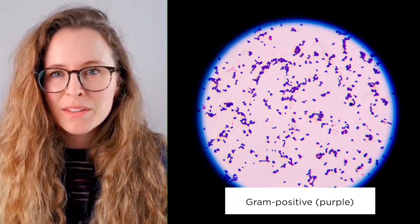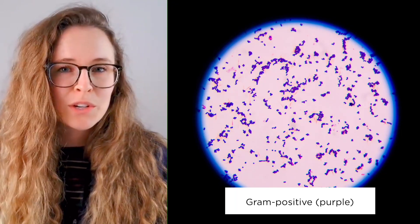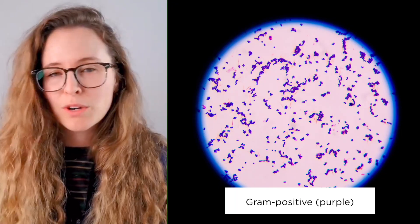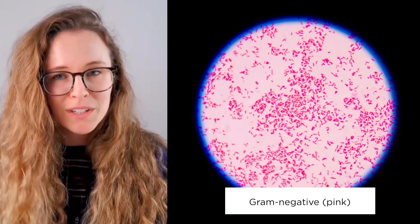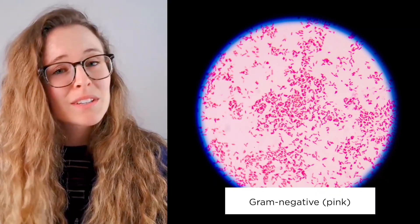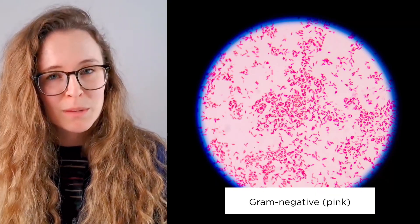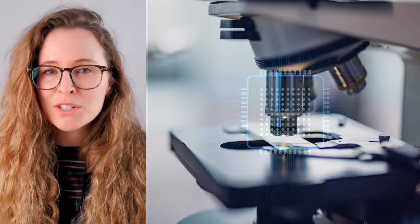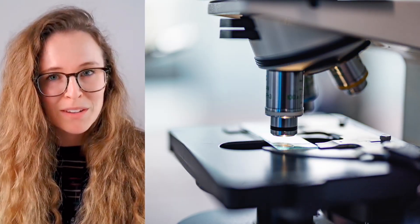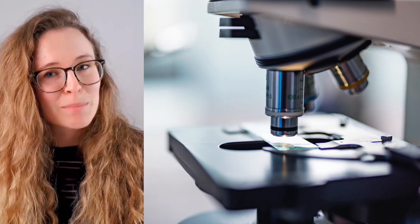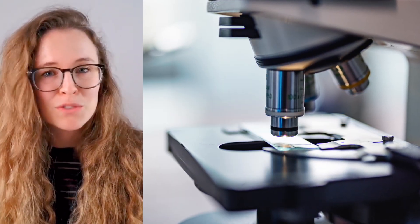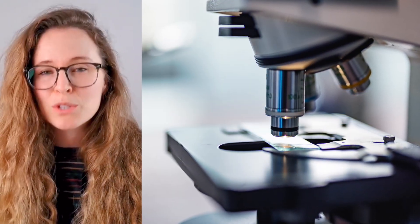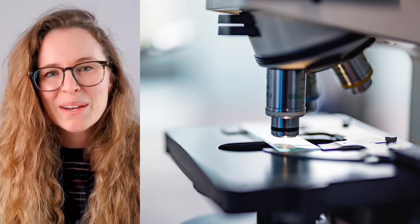Gram staining is a core method for differentiating gram-positive and gram-negative bacteria. Recently, researchers developed a way to virtually gram-stain bacteria using AI and microscopy, overcoming limitations of the traditional method and highlighting the power of technology for transforming routine laboratory techniques.